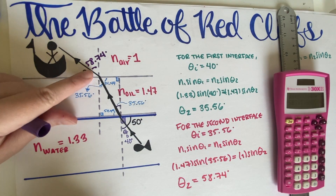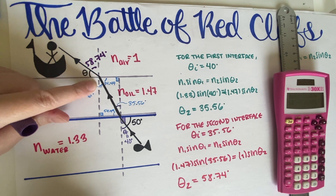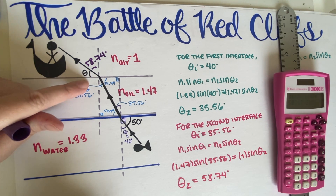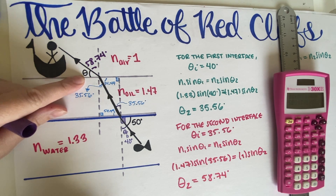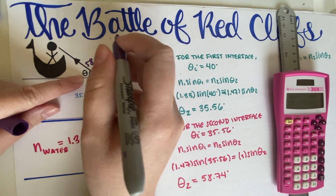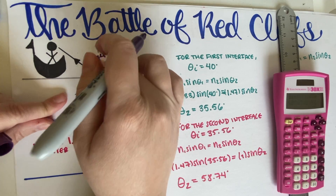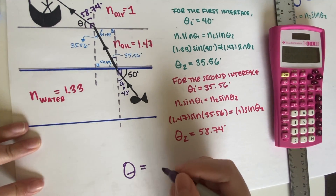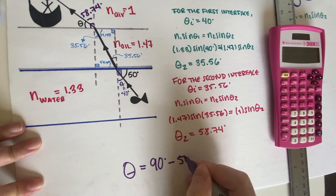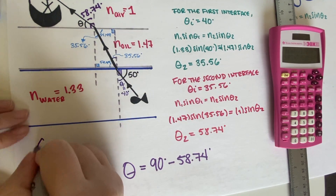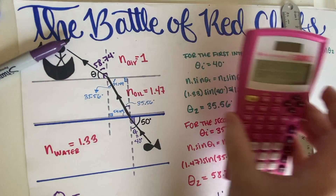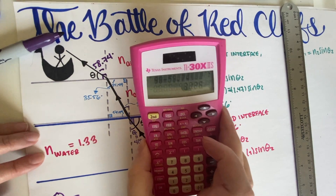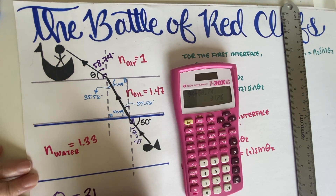Remember, the angles in Snell's law are always measured from the imaginary perpendicular line to the ray — not from the interface. The angle that the problem is actually asking for is measured from the interface, which makes it the complementary angle. Since the imaginary line and the interface are perpendicular by definition, the two angles must add to 90 degrees. Therefore, the final answer is 90 − 58.74 = 31.26 degrees.